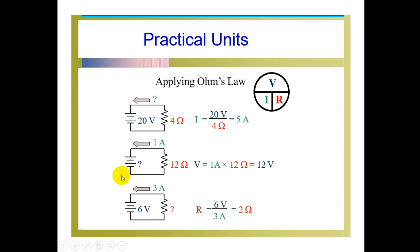In the third diagram, voltage is given and current is given, but we have to find out the resistance. To find the resistance, we use the equation R is equal to V by I. The voltage is 6V and the current is 3A, so the resistance will be 2 Ohm. We can find practical values like this very clearly from the diagram.